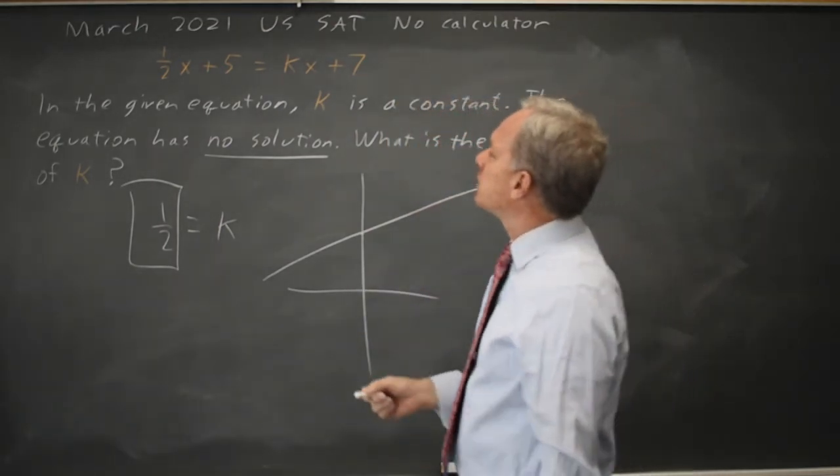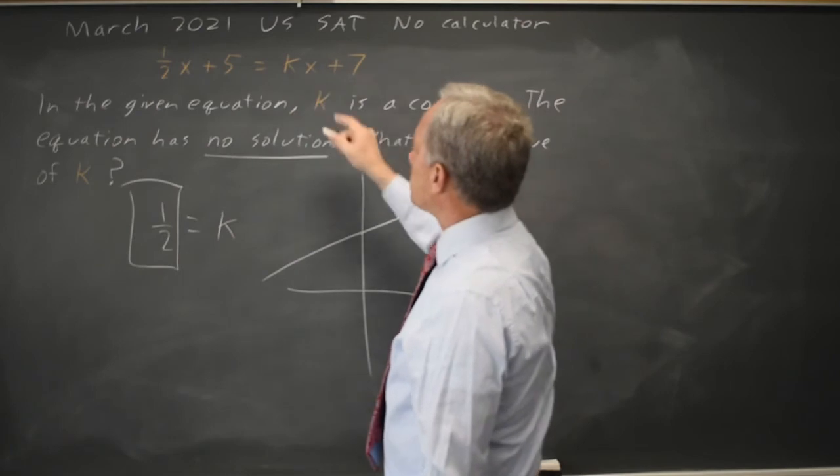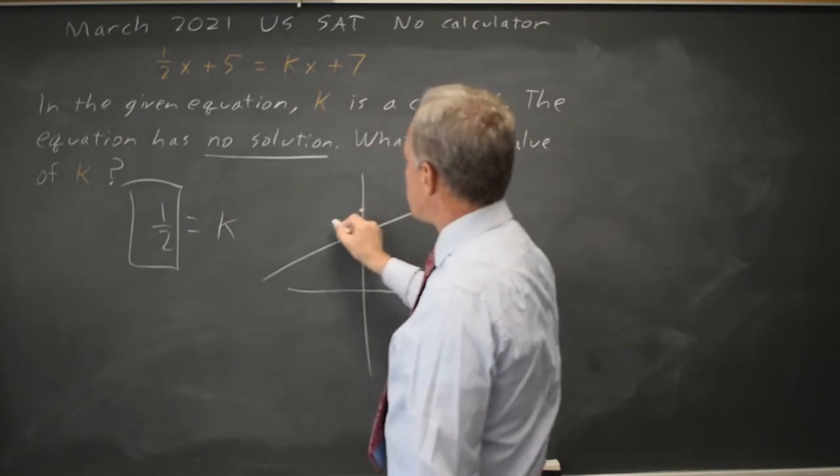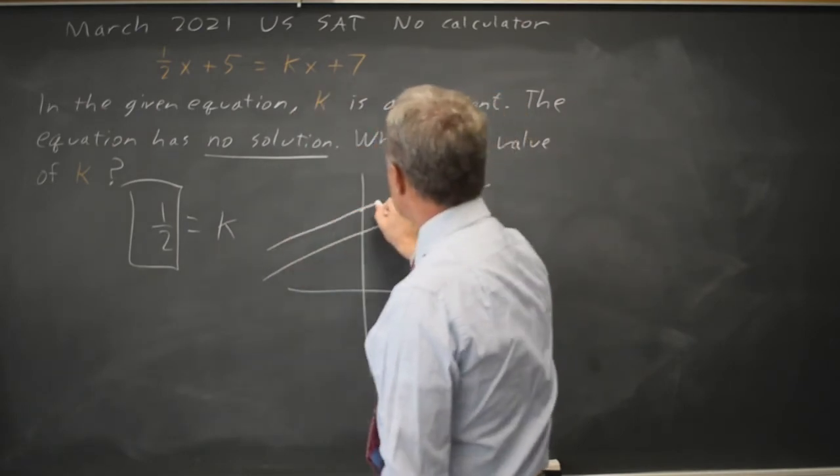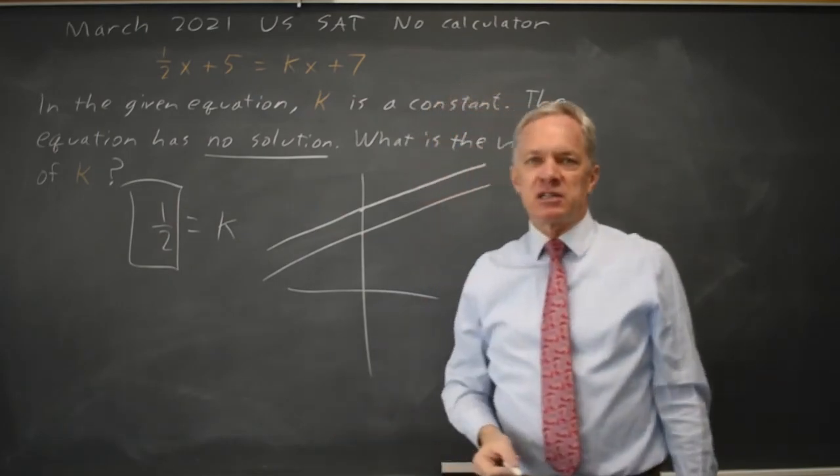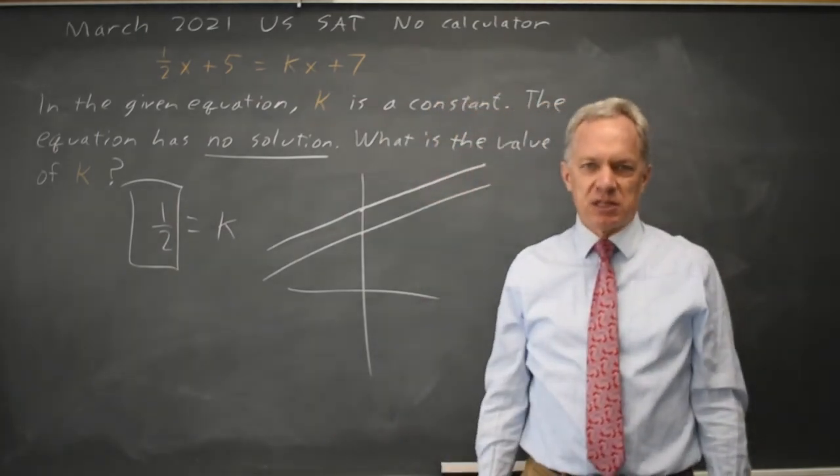If we graph the right-hand side, kx plus 7, so the intercept is 7, and there is no solution, no point where they intersect, the right-hand side has to have the same slope as the left-hand side, so k equals 1 half.